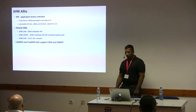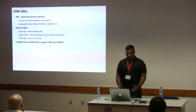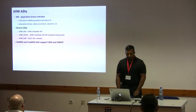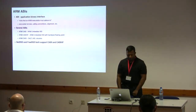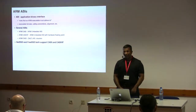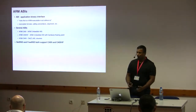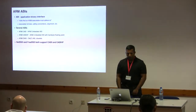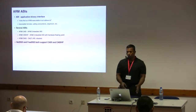Now let's talk about software. An ABI — Application Binary Interface — defines rules an ARM executable must adhere to: executable formats, calling conventions, alignments, and what system calls look like. ARM has several ABIs: the ARM Embedded ABI (EABI) and EABI with hardware floating point (EABI-HF) are the current ones. There's an older OABI. NetBSD and FreeBSD both support EABI and EABI-HF, and you build your toolchain for the target ABI.